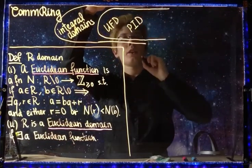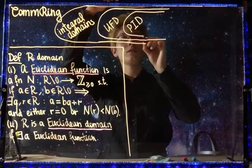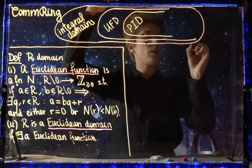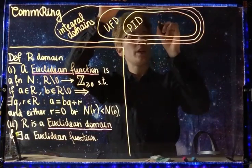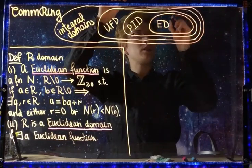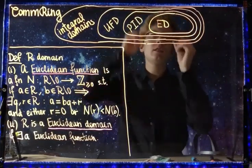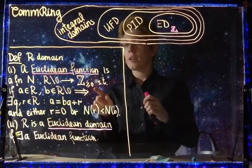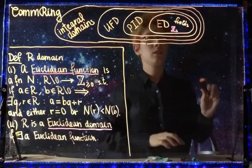Among UFDs there are principal ideal domains where every ideal is generated by just one element. By trying to abstract the idea of the Euclidean algorithm, we introduced Euclidean domains. A particular example of a Euclidean domain is the ring of integers with Euclidean function the absolute value of an integer, as well as fields, which are trivially Euclidean domains.